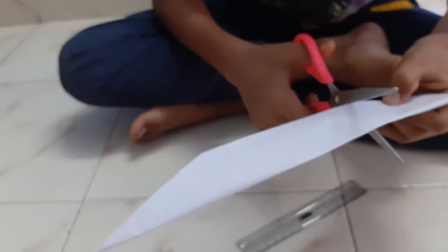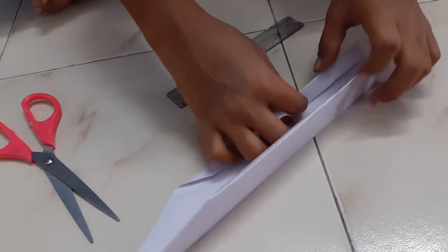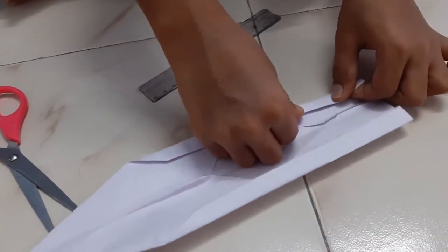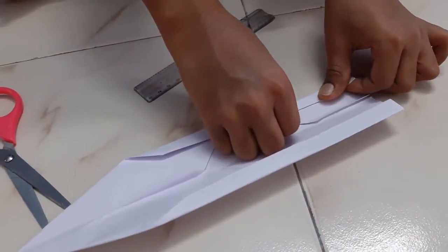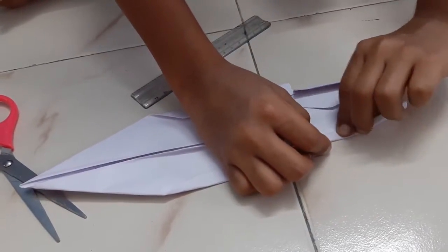From the point we have marked. You can mark it with the pencil also. Like this. We will not cut it fully or else it will get wrong. And then open. This part will come in. And the other side will also be same. Like this.